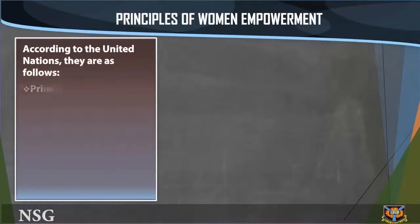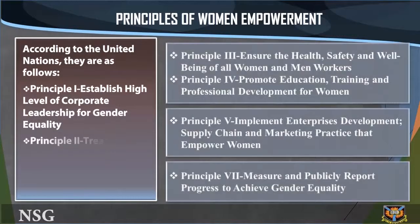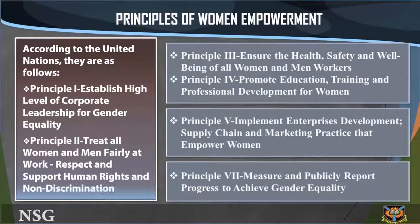Principles of women empowerment. According to the United Nations, the principles of women empowerment are as follows. Principle 1: Leadership promotes gender equality. Establish high-level corporate leadership for gender equality. Affirm high-level support and direct top-level policy for gender equality and human rights. Establish company-wide goals and targets for gender equality and include progress as a factor in managers' performance reviews. Engage internal and external stakeholders in the development of company policies, programs, and implementation plans that advance equality.